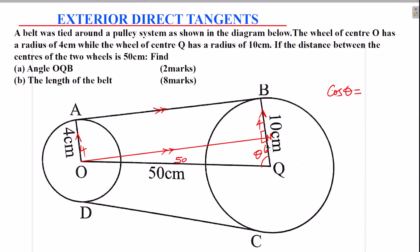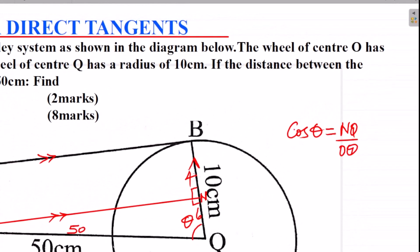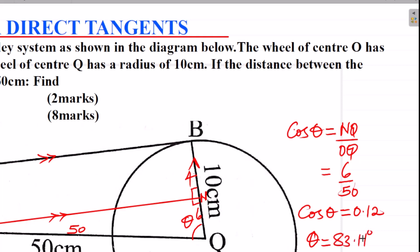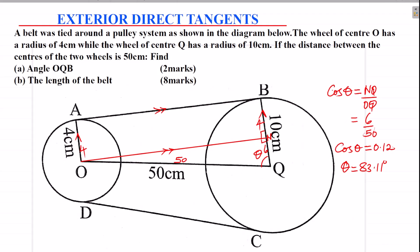Cosine of that angle is given by adjacent divided by hypotenuse. The adjacent is NQ and the hypotenuse is OQ. So NQ is 6 divided by the hypotenuse, the longest side, that is 50. This gives cosine of that angle as 0.12. Theta is equal to the cosine inverse of 0.12, and using the calculator this will give 83.11 degrees. And that is the angle OQB.